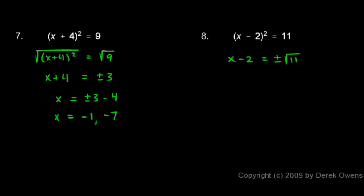Now, we need to solve for x. We still have this minus 2 over here, so we need to add 2 to each side. And on the left, the 2's obviously cancel, and we're left with x is equal to plus or minus the square root of 11 plus 2.